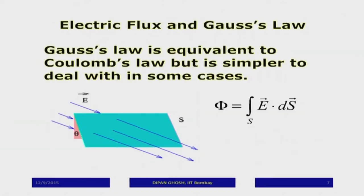Gauss's law is completely equivalent to Coulomb's law, but the reason we use Gauss's law is that it is much simpler to deal with in certain cases — particularly cases exhibiting symmetry. Later when we do magnetostatics, Biot's law plays the role of Coulomb's law, and there is also a magnetic Gauss's law. Even there, laws that depend on symmetry — such as Ampere's law — are much easier to deal with.